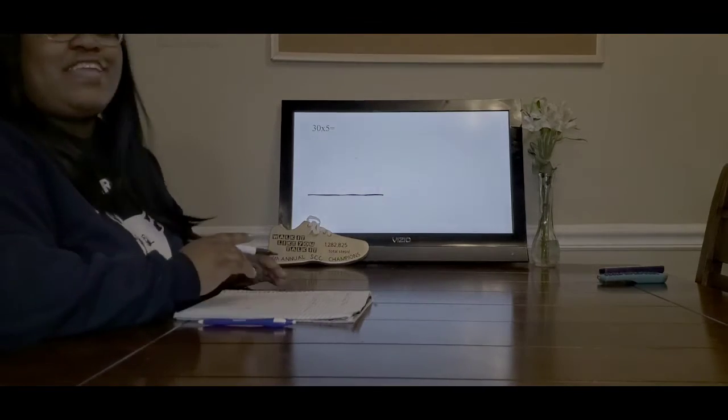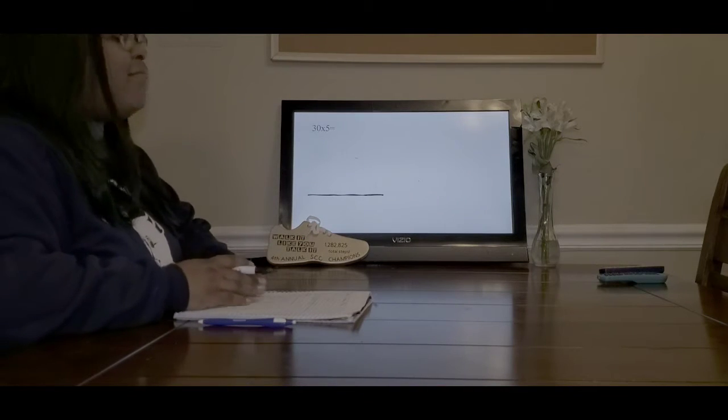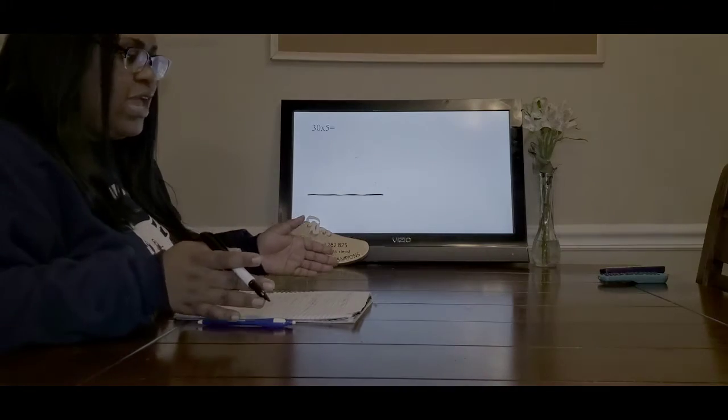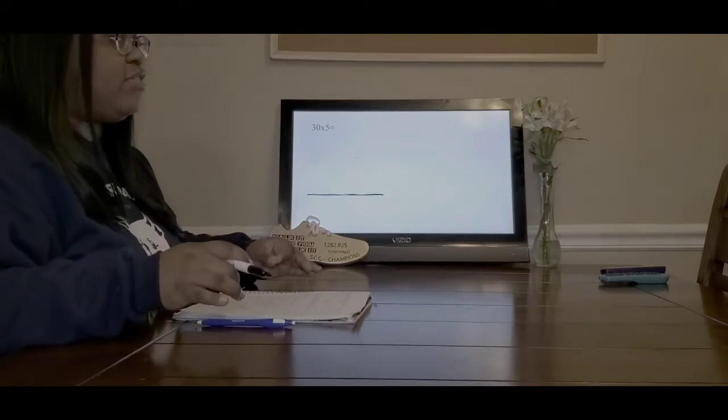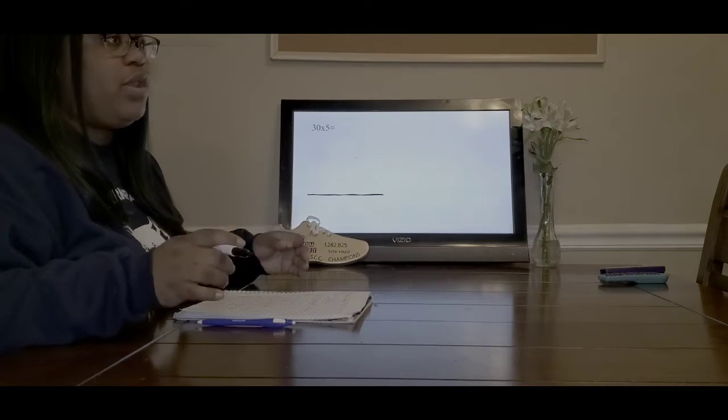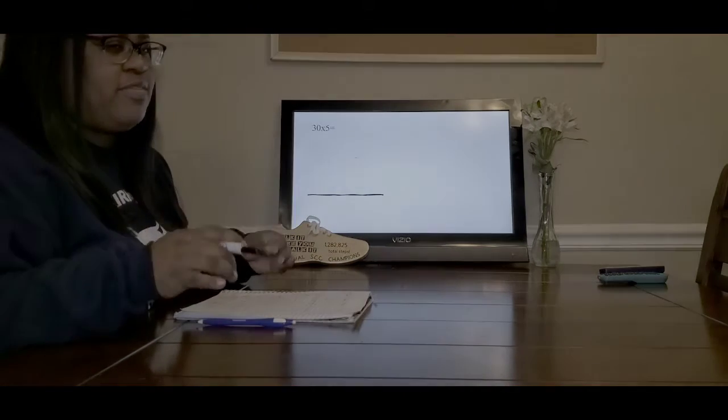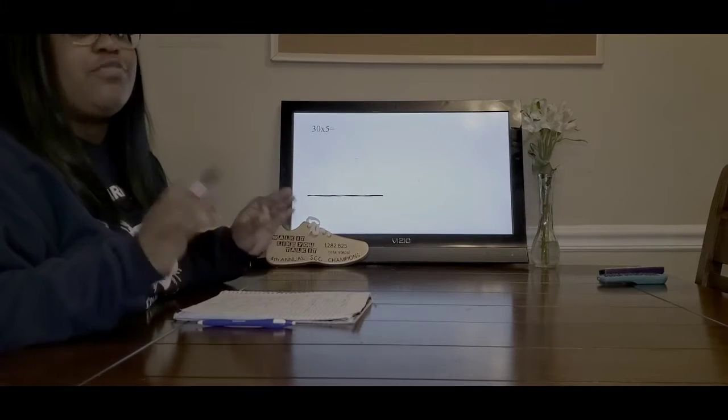Alright, so the first thing we need to know to figure out this problem is what kind of equation to use. I know that we have 30 rows, and in each row there are 5 seats. I could count up each one of those rows, but that would take a long time. So I'm going to speed up this process and use multiplication.